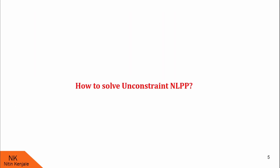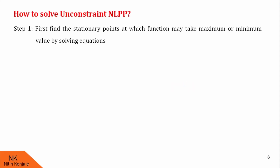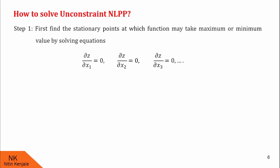Let us see how to solve unconstrained NLPP. In Step 1, we find the stationary point at which the function may take a maximum or minimum value by solving the equations ∂z/∂x1 = 0, ∂z/∂x2 = 0, ∂z/∂x3 = 0, and so on, where z is the objective function and the xᵢ's are the decision variables. We partially differentiate z and equate to 0; solving these equations gives us a stationary point. Later we will determine whether the function attains a maximum or minimum at this stationary point.